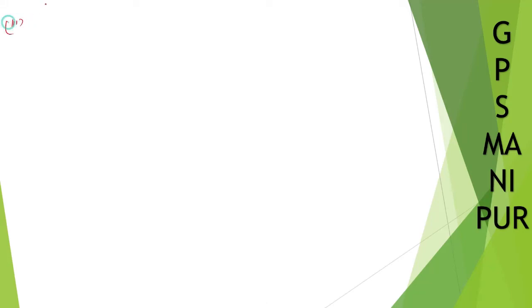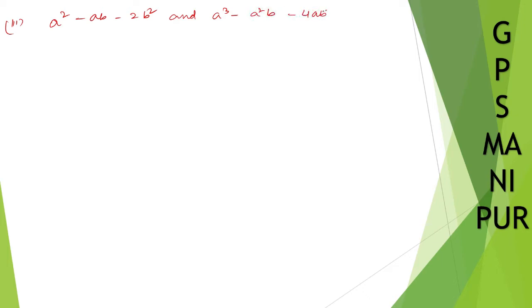Now we are doing question number three, Roman numeral III, exercise 2.4. The question is: a square minus ab minus 2b square, and a cube minus a square b minus 4ab square plus 4b cube.